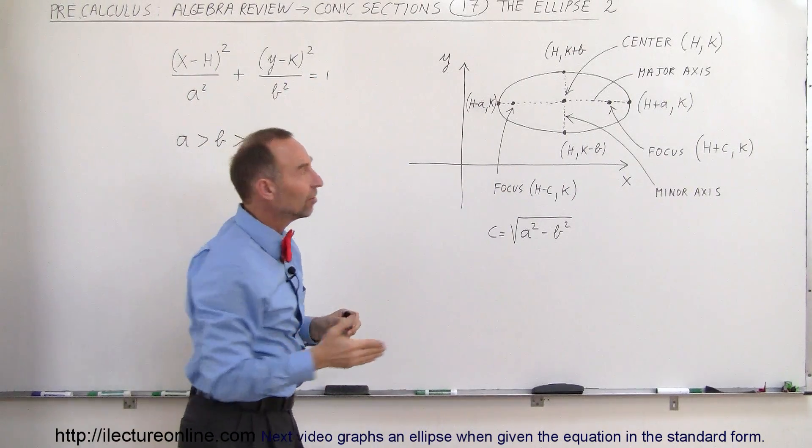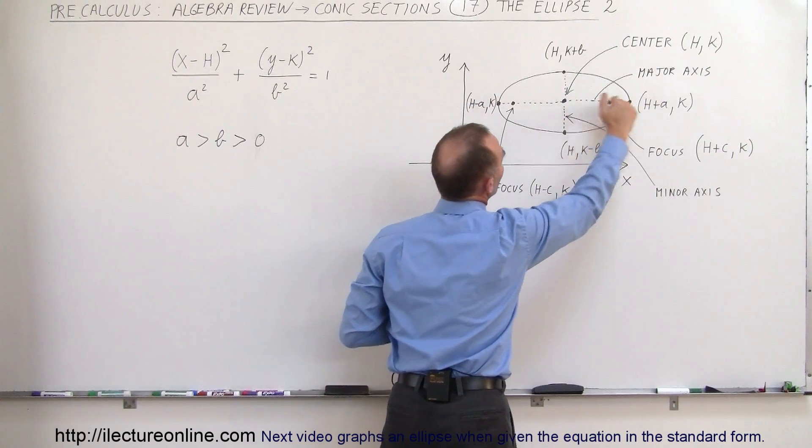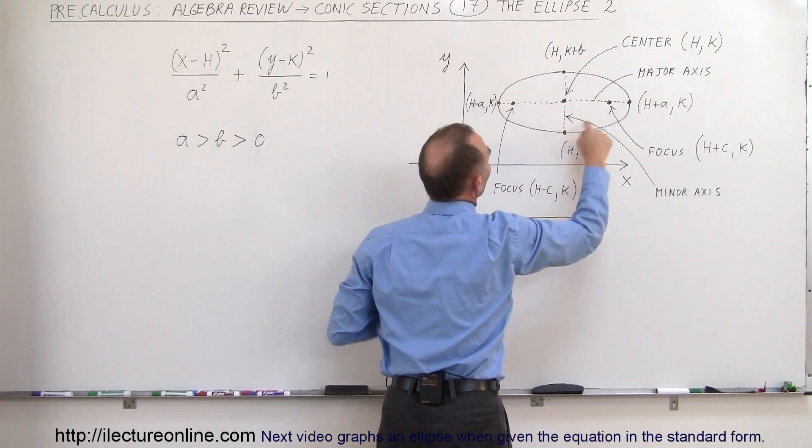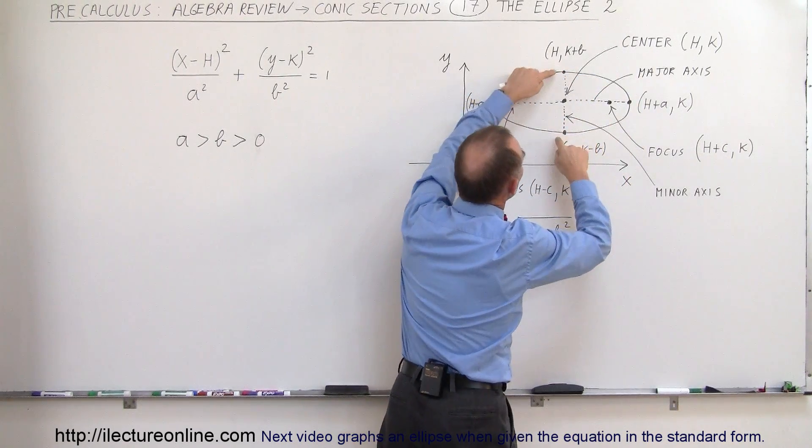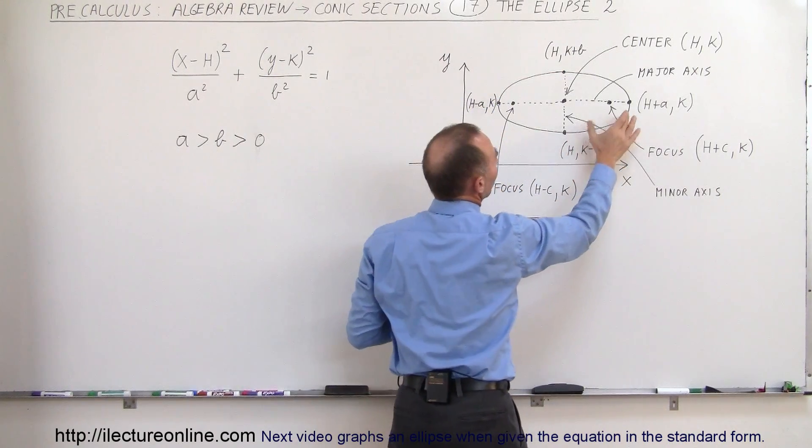Also notice that this is the minor axis, and this is the major axis. These are the vertices: the two vertices of the major axis and the two vertices of the minor axis.